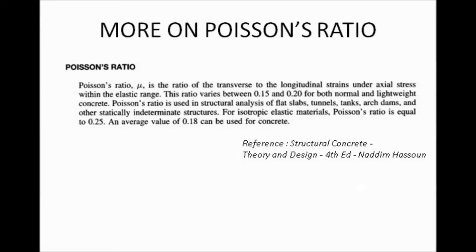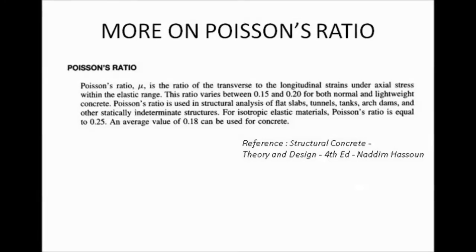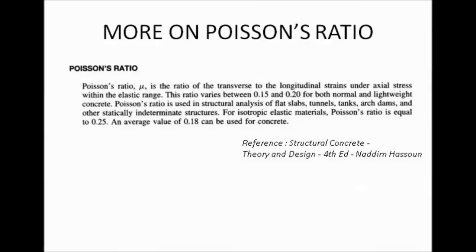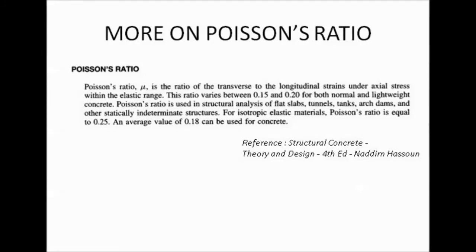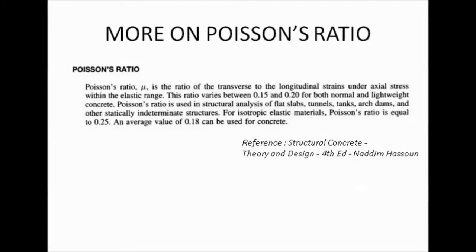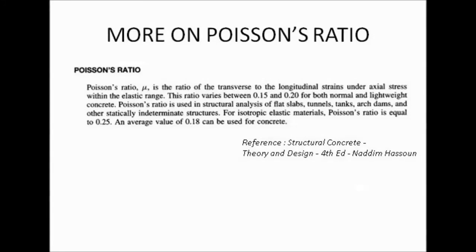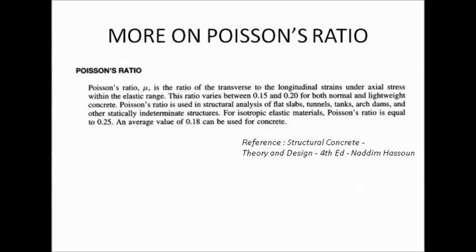For isotropic elastic material—isotropic material means that the properties of the material are the same in all dimensions—Poisson's ratio is equal to 0.25. For isotropic elastic material, an average value of 0.18 can be used for concrete. Thank you for watching.